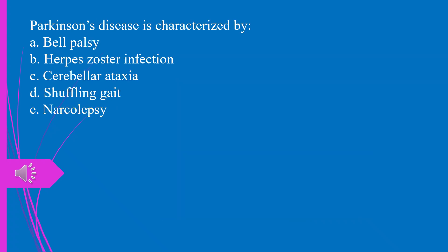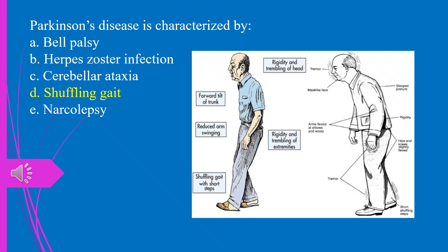Question 13. Parkinson's disease is characterized by: a) Bell's palsy, b) herpes zoster infection, c) cerebellar ataxia, d) shuffling gait, e) narcolepsy. The answer is d, shuffling gait.